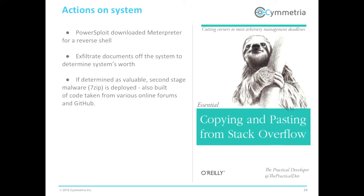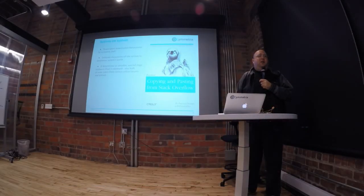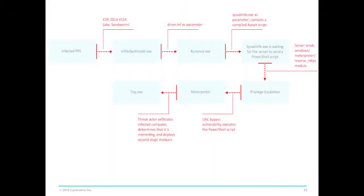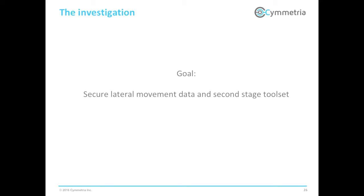They have a PowerShell — they download a PowerSploit interpreter for a reverse shell, nothing too complicated. They have documents trying to determine the value of the system, and then if they determine it's valuable, they would download a second-stage malware. Or they continue connecting to other systems and then download a second-stage malware. Our goal was to secure the lateral movement data, the TTPs, as well as the second-stage toolset, because the script interpreter alone doesn't really help us — we want to actually see what they do.